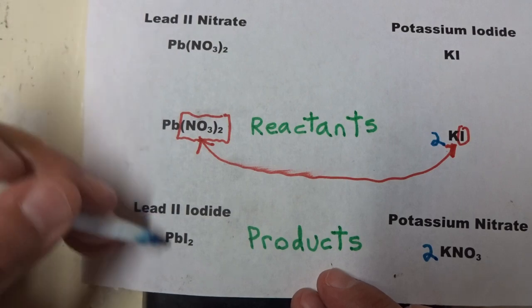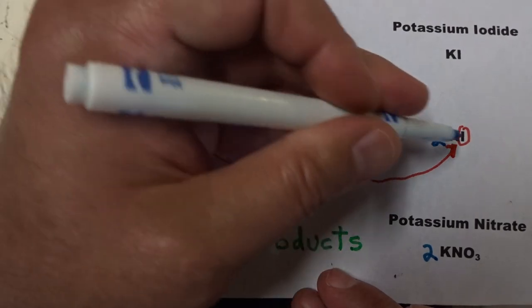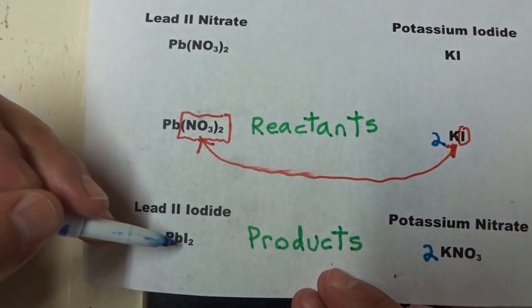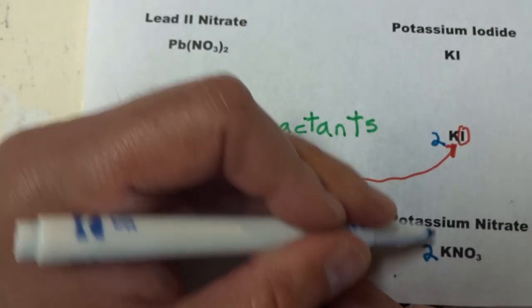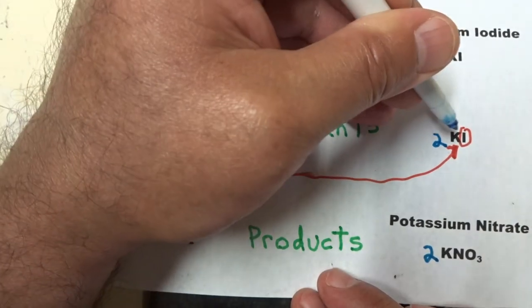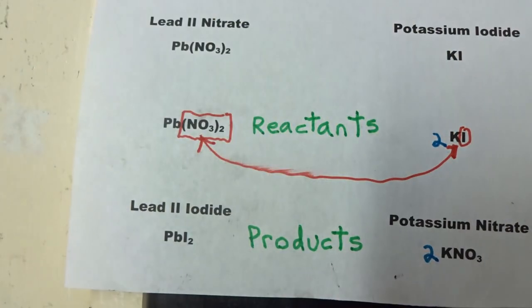And now we have one lead, one lead, two iodines, two iodine anions balanced. We have two potassium. We have two potassium over here now. And the equation is balanced.